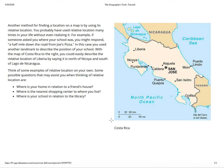Another method for finding a location on a map is by using its relative location. You have probably used relative location many times in your life without even realizing it. For example, if someone asked you where your school was, you might respond, 'It's a half mile down the road from Joe's Pizza.' In this case, you used another landmark to describe the position of your school.